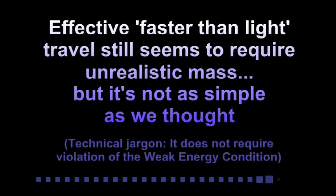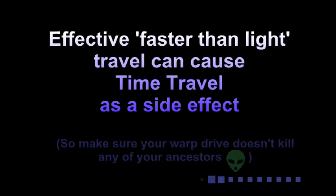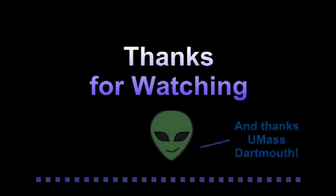So how can we sum this up? We have seen that effective faster than light travel schemes still seem to require unrealistic mass, but not negative mass as previously thought. The technical jargon for that is that it doesn't require violation of the weak energy condition. We've also seen that effective faster than light travel schemes may produce time travel schemes as a side effect. So make sure your warp drive doesn't kill any of your ancestors. And that's it. Thanks for watching.